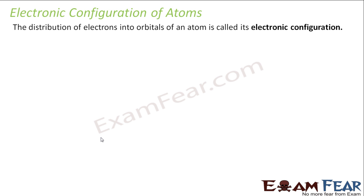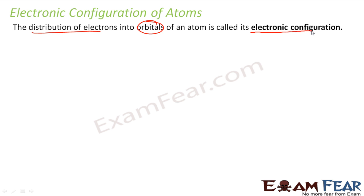Now we'll study the electronic configuration of atom. The distribution of electrons into orbitals of an atom is called electronic configuration, where we tell how the electron is distributed across various orbitals in an atom.